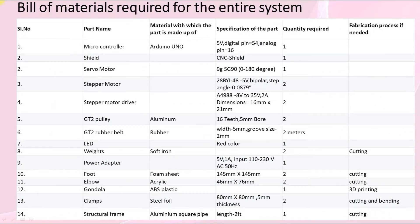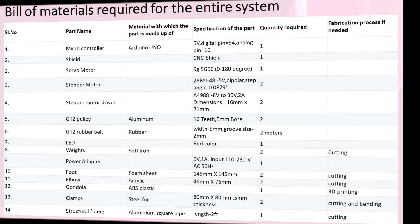Next we move on to bill of materials required for the entire system. We have used various parts: microcontroller Arduino Uno, shield CNC shield, servo motor, stepper motor, stepper motor driver, GT2 pulley, GT2 rubber belt, LED, weights, power adapter, foot, elbow, gondola, clamps, and structural frame.